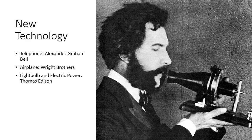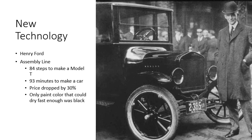Along with new technology, you get new techniques. Henry Ford and the Ford Motor Company came up with the idea of an assembly line — workers in a line doing the same job again and again. This allowed complicated things to be manufactured quickly. It took 84 steps to make a Model T Ford, which equals 93 minutes to make a car. This dropped the price of the vehicle by 30%, and since the only paint color that dried fast enough was black, all Model T's were black. This is where we get the mass production industry we live in today.